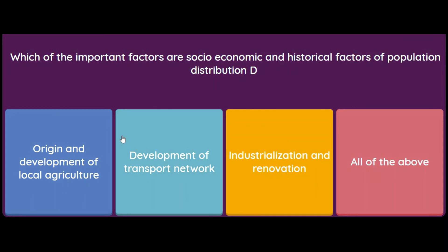The last question is: which of the following are important socio-economic and historical factors for population distribution? Options include origin and development of local agriculture, development of transport network, and industrialization. All of these are economic factors and are socio-economic and historical factors of population distribution. Thank you for watching — I wish you all success and good luck for your exams. Please like, subscribe, and share the channel.